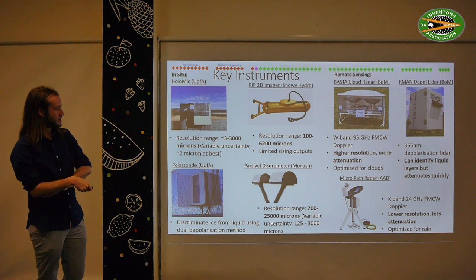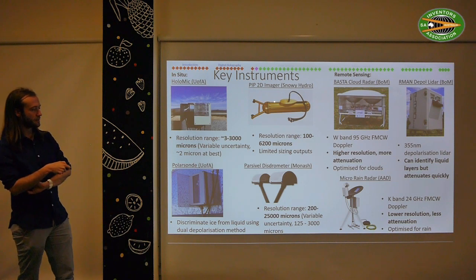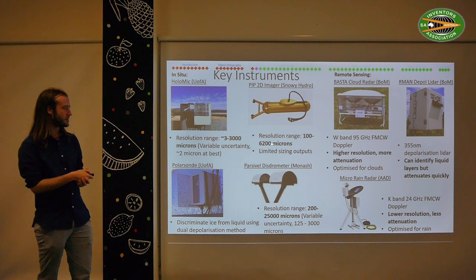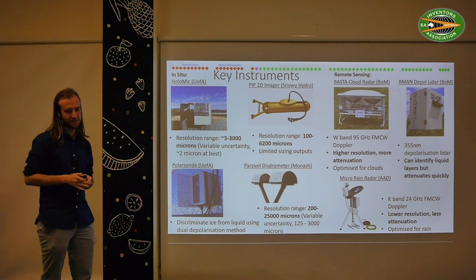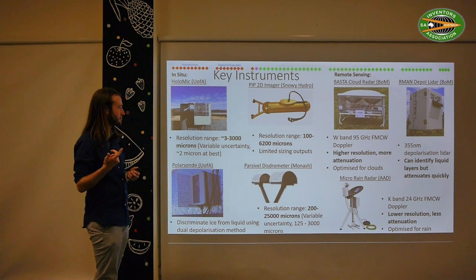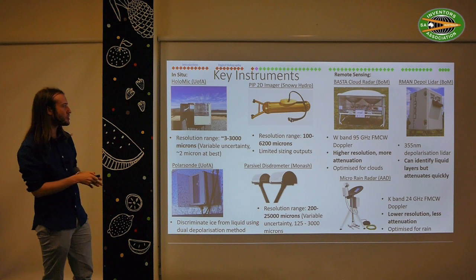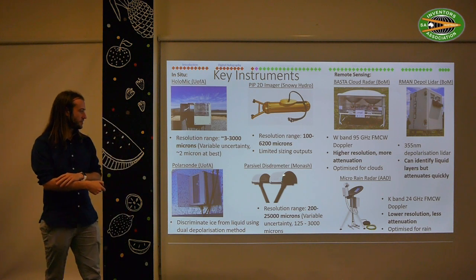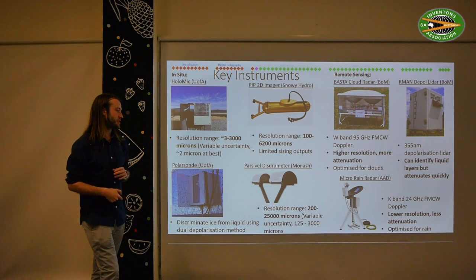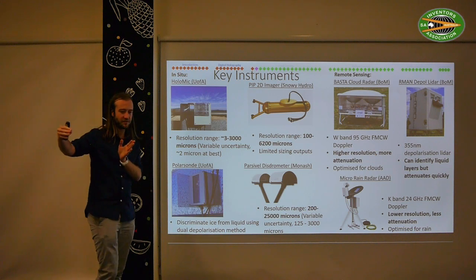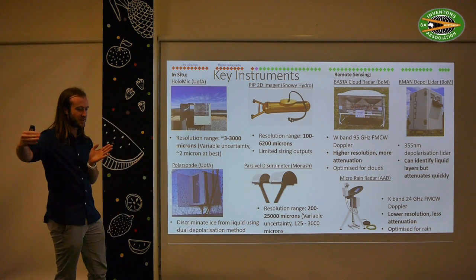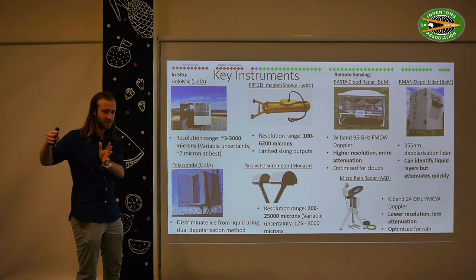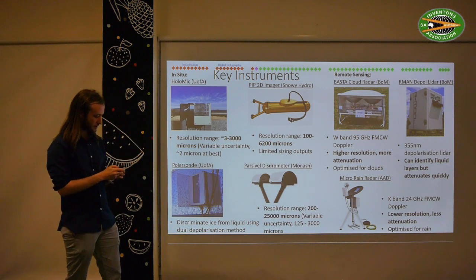We also deployed the standard PIP 2D imager, which takes 2D slices and can measure particles from about 100 microns up to 6 millimetres, though it's not a quantitative tool. We deployed a Parsivel disdrometer as well — another standard instrument — which measures particles from about 200 microns up to about 25 millimetres, targeting rain. In combination with our holographic observations, this gives quite nice coverage of all the particles we'd expect to see.